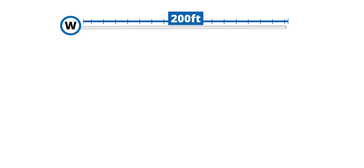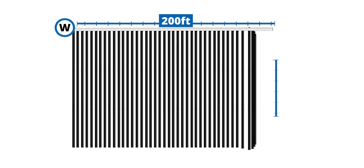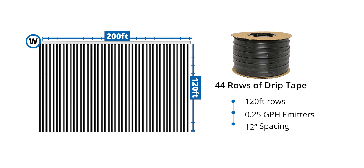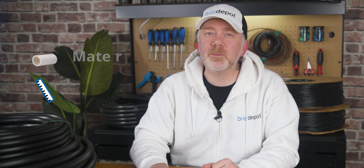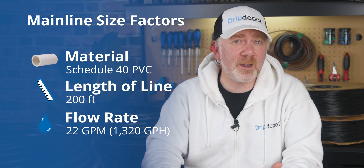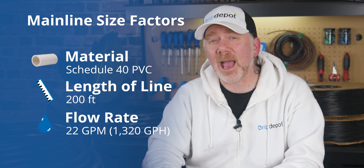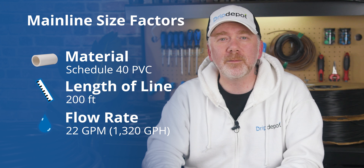In this example, our PVC pipe is 200 feet long and leads to a field that consists of 44 120-foot rows. Those 44 rows will be irrigated by drip tape with a 0.25 gallon per hour emitter spaced every 12 inches. With that information, we can determine almost everything needed to size the mainline. The material is PVC, we have 200 feet of mainline length, and 22 gallons per minute as our system flow rate.